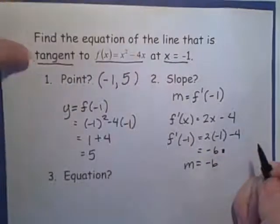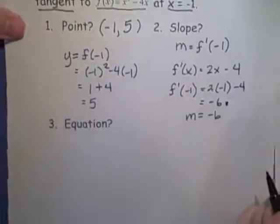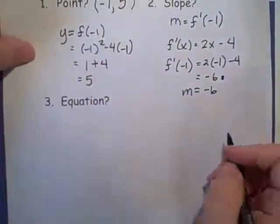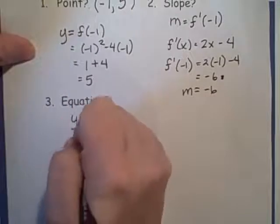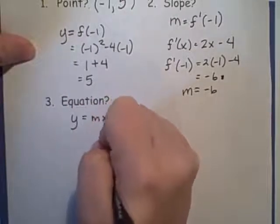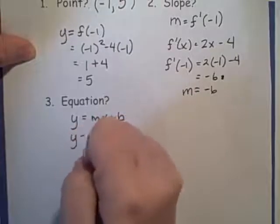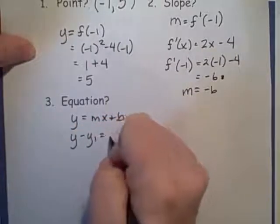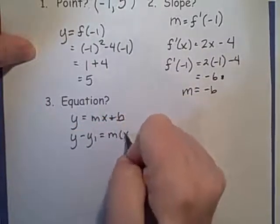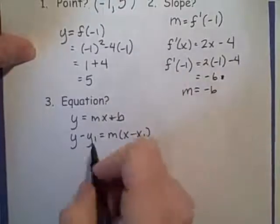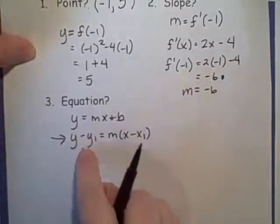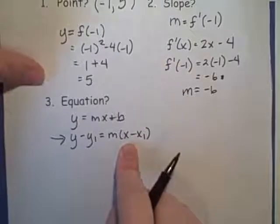Now we're ready to find our equation. We have two ways to come up with the equation. We can use the slope intercept form, y equals mx plus b, or we can use the point-slope formula, y minus y1 equals m times x minus x1. I'm going to use this second formula, but it doesn't really matter how you go about this.